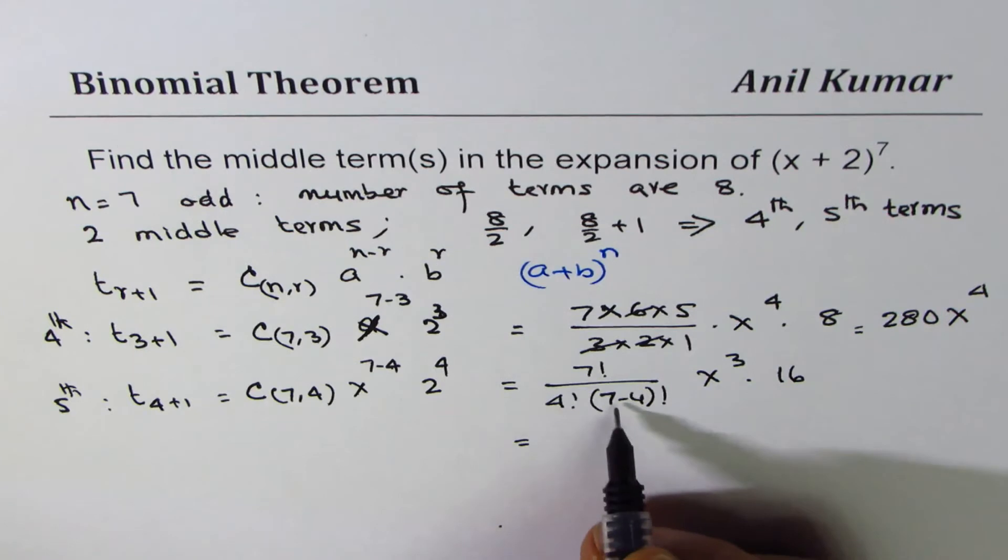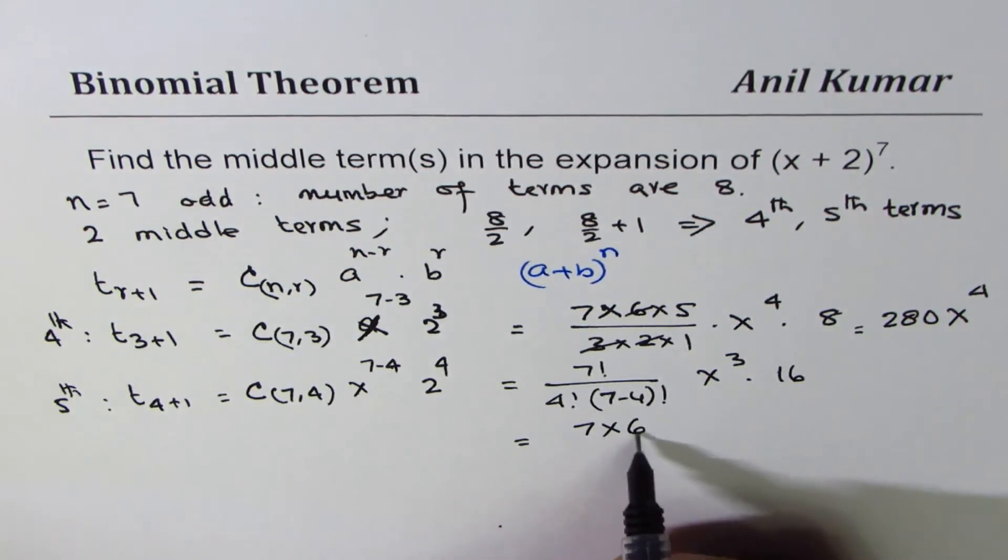7 factorial, we could write this is 7 minus 4 is 3 factorial. So 7 times 6 times 5, 4 factorial will cancel, divide by 3 times 2.